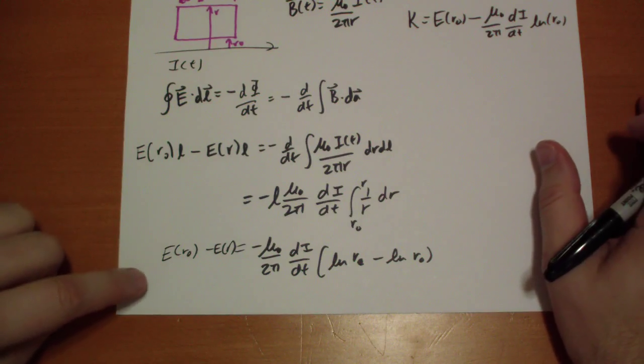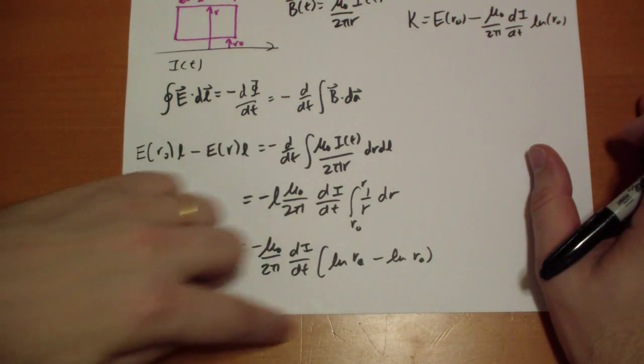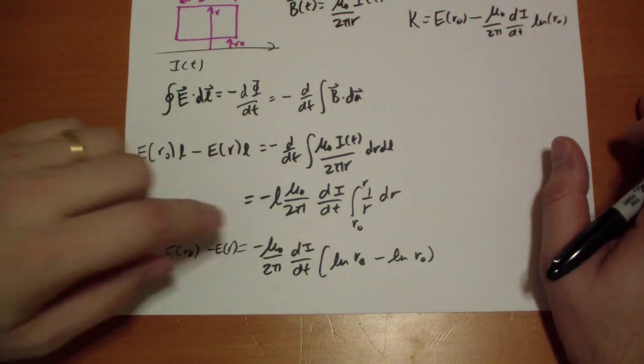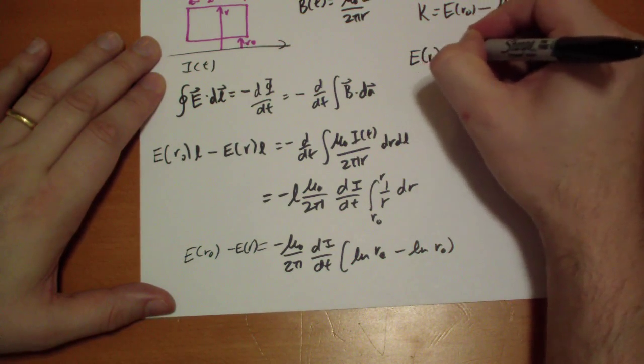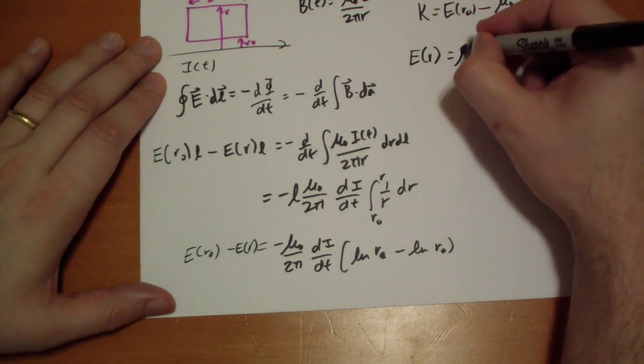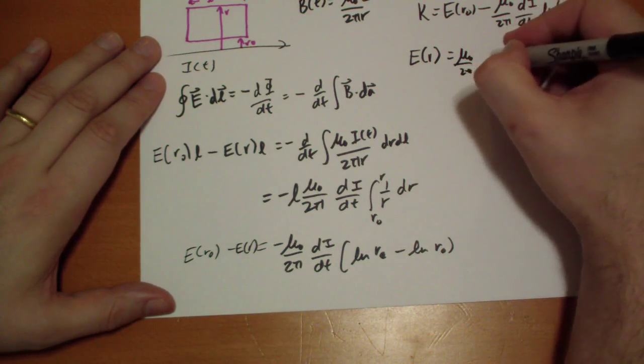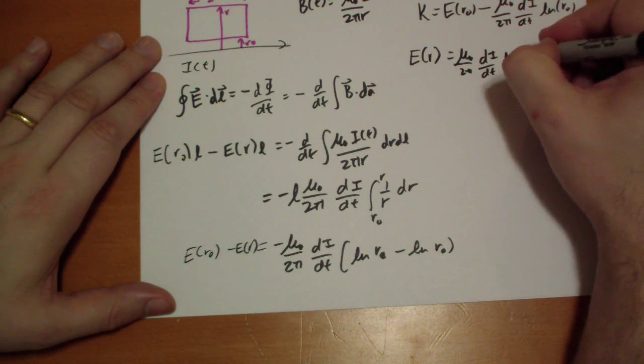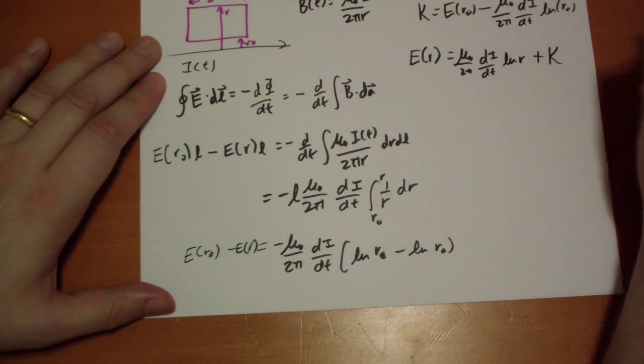So this basically moves this guy over to the left side, so we get K, move this guy over to the right side. And so we get E of r is equal to mu naught over 2 pi d i by dt log of r plus this constant K.